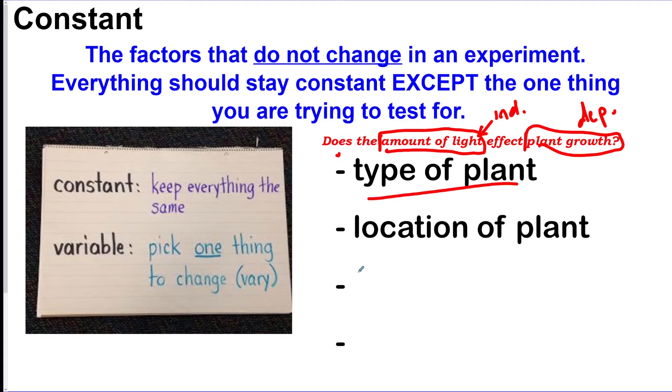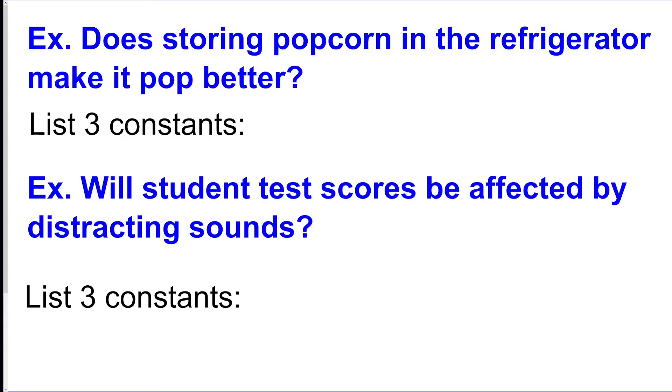You're always going to use the same type of plant, you're going to keep it in the same location, you can use the same type of soil, you can water it the same amount, the same person doing the experiment. Everything has to be the same except the one thing that you're trying to measure, which is going to be the amount of light. So really the only thing that should not stay constant is the amount of light.